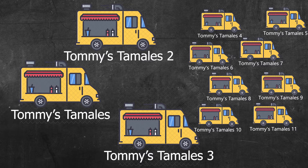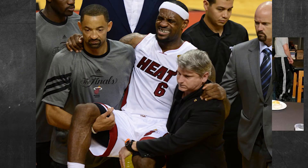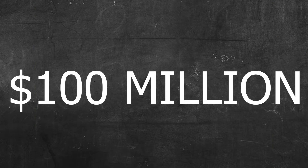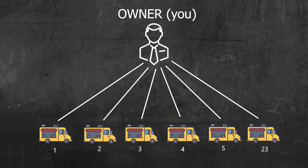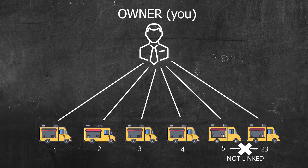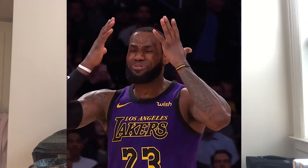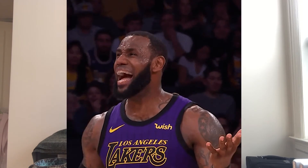LeBron James comes to eat at Tommy's Tamales number 23 and becomes deathly ill. He sues Tommy's Tamales 23 for $100 million and wins, but he can only collect $100,000. Why? Tommy's Tamales 23 is separate from all the other Tommy's Tamales that you own, even though they all have the same name, the same menu, and the same owner. This means LeBron James can only collect whatever he can get from that single Tommy's Tamales food truck and nothing else.